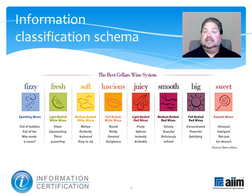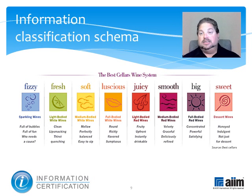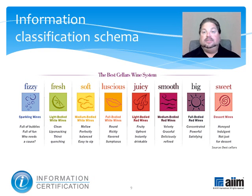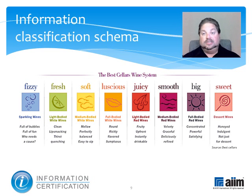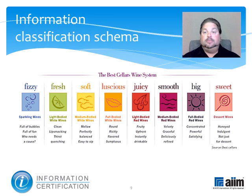A classification schema arranges or divides objects into groups based on characteristics that the objects have in common. This allows users to find an object more quickly than if it had been left in an undifferentiated mass, makes it easier to detect duplicate objects, and conveys meanings that may not be conveyed by the object's name or its spelling. A well-considered schema is valuable in a security context because it allows groups of objects to be managed and secured as a unit, rather than as individual elements — a much more efficient way to go.